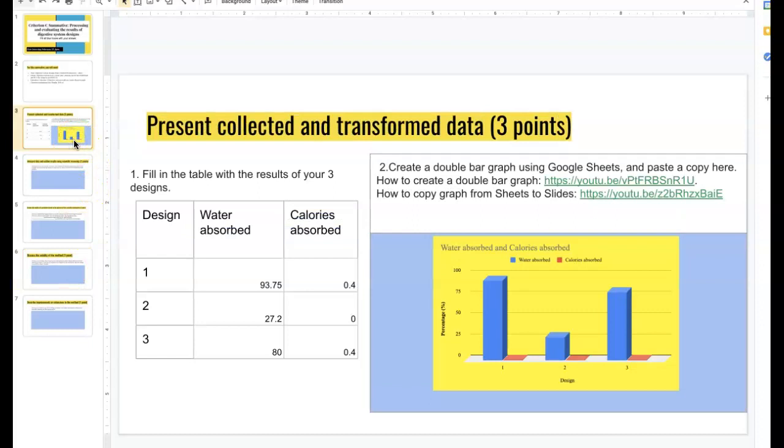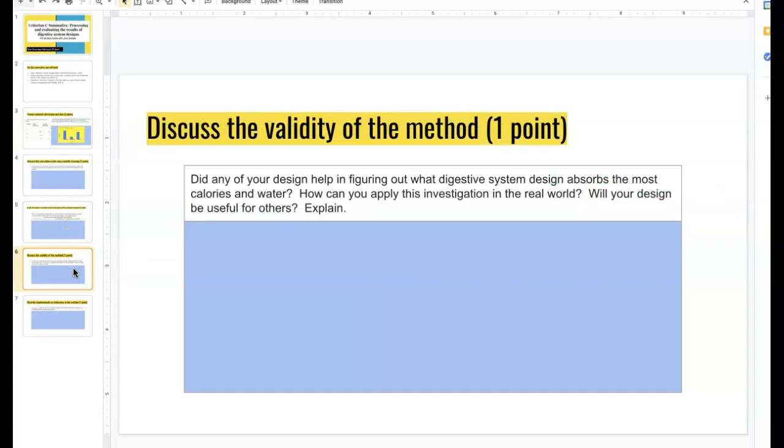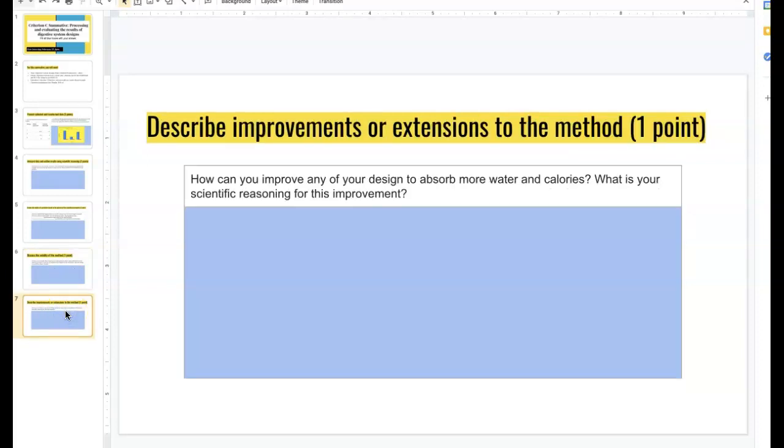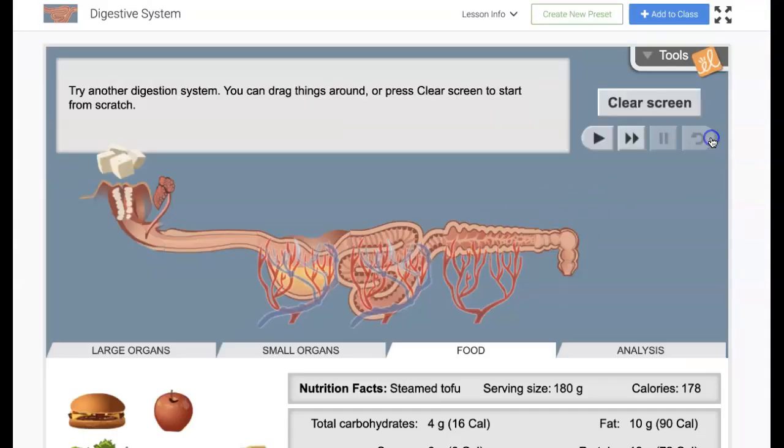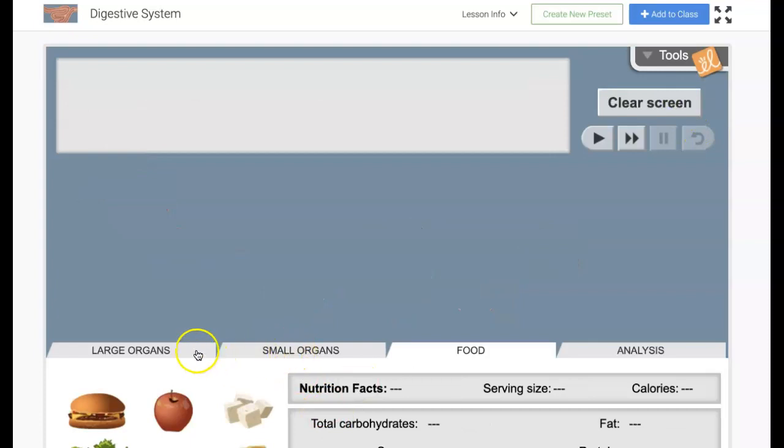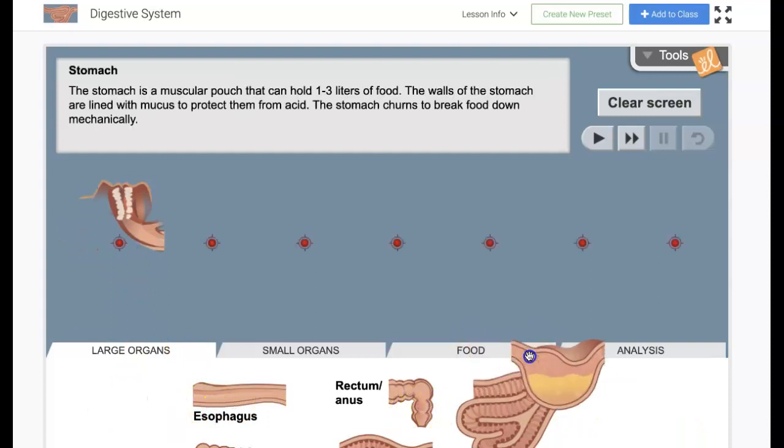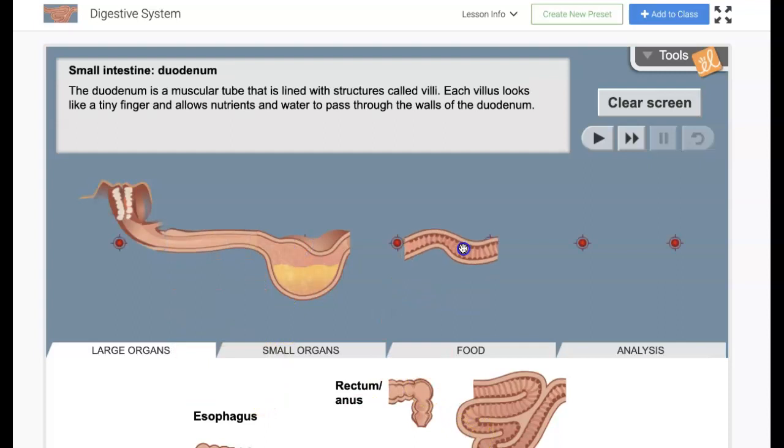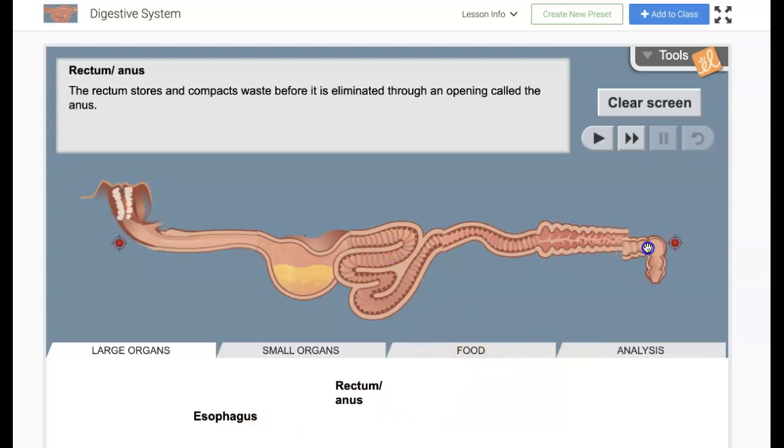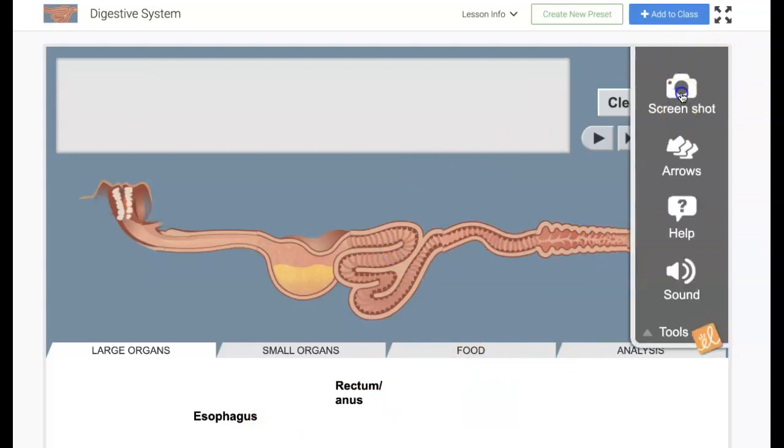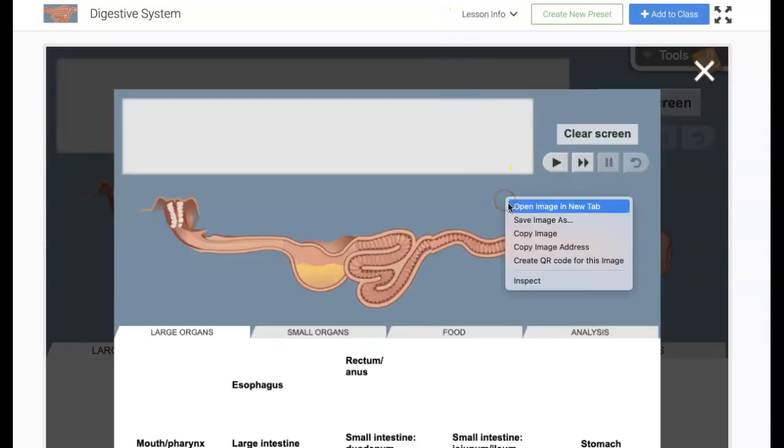And then the last one is improvements or extensions to the method. So with this one, think about, now it's more like thinking about your design 4. What would you add or take out of your best design to improve the absorption of water and calories? And then why would you do that? And then it'd be great if you can, if you're going to add another one, then do it in the gizmo. Create your best design the way you think it should go. And then take a screenshot of it and paste it onto, take a screenshot of your best improvement and then paste it onto this one.